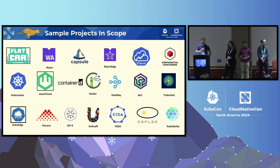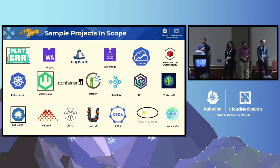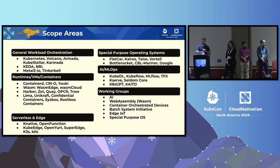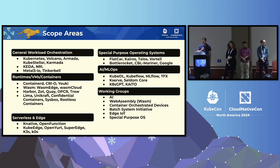These are some of the projects in scope of Runtime — a lot of familiar faces. You'll notice even Kubernetes itself was originally a Runtime project, fairly mature these days. We wanted to give a special call out to the graduated project CubeEdge, as well as the newly incubating Flatcar and Wasm Cloud, all under the Runtime scope. This covers all of WebAssembly, orchestration, runtime, special operating systems like Immutable OS like Flatcar, and the specific AI projects as well.